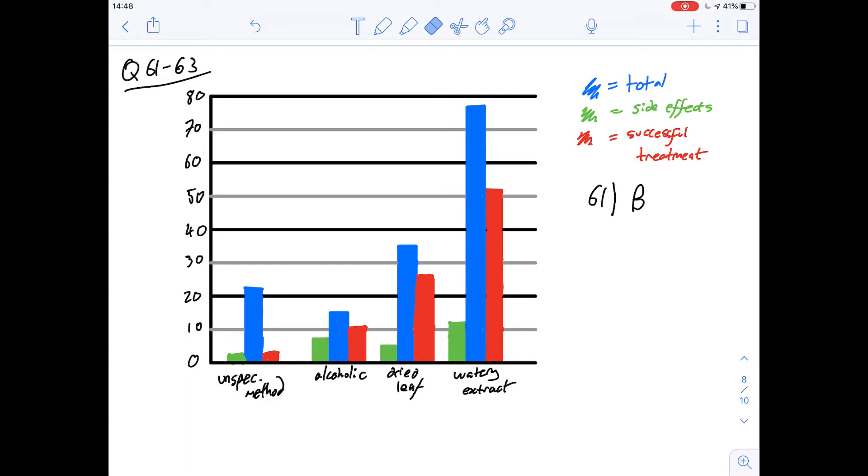So supposing that only those who were treated successfully had side effects that means that the total number of people's side effects let's say it's 12 here is the same group, those 12 people are in the successful treatment group.